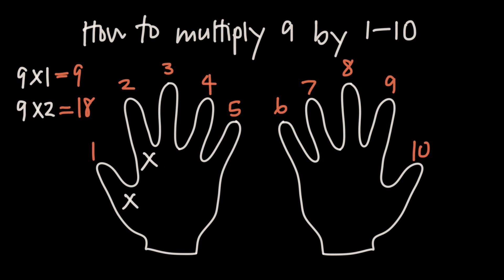Let's look at a couple of fingers on the right hand too. If we want to multiply 9 by 7, we bend down our 7th finger. We count 6 fingers on the left and 3 fingers on the right. So 9 times 7 is 63.